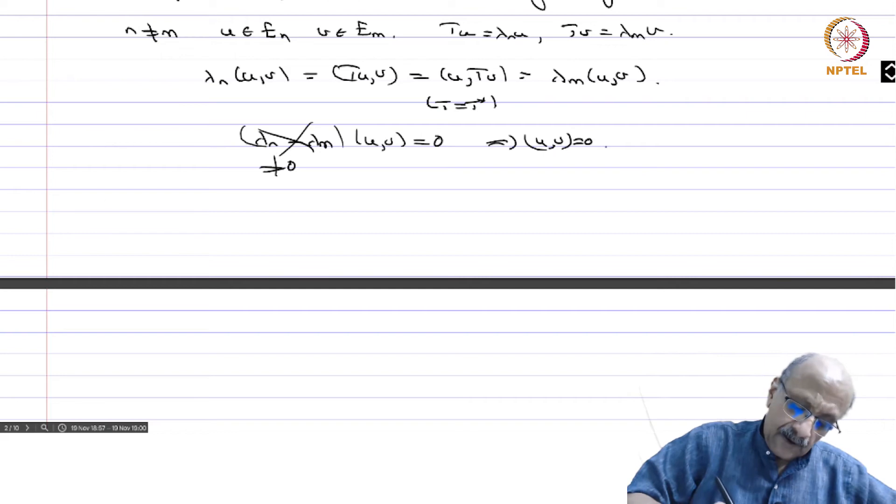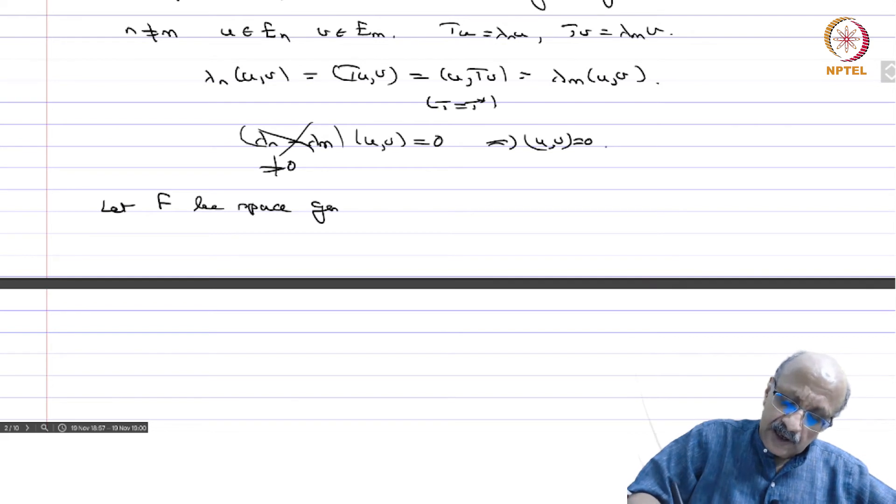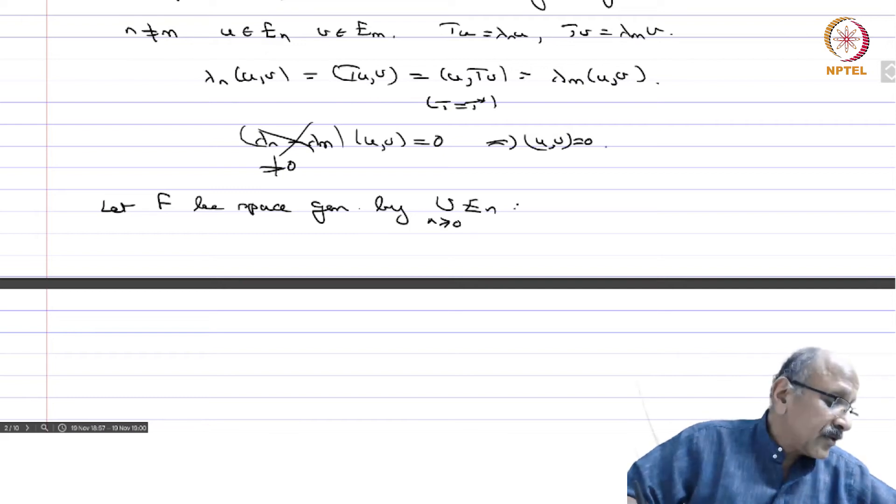All these spaces are mutually orthogonal to each other. Now let F be the space generated by union E_n n ≥ 0. You put all these spaces together.